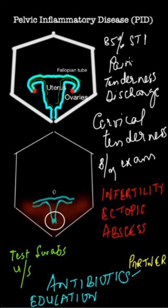Typically, patients feel pain lower down in the abdomen, as shown over here, and discharge after sexual activity, which can be quite painful.